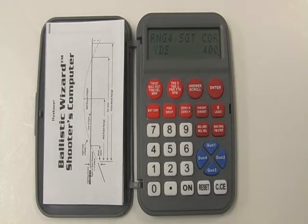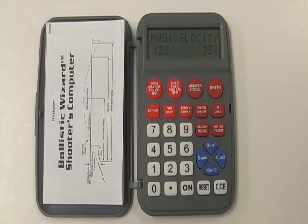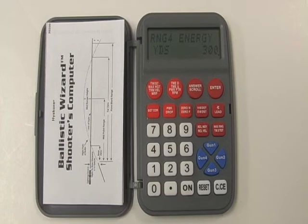Next, we have range for sight correction. This is the distance that the wizard will use to calculate the number of quarter-minute clicks necessary to adjust elevation when shooting at a distance other than the zeroed distance. Next, we have range for velocity — the input necessary for calculating velocity at a given distance. Next, we have range for energy — the distance that needs to be input for calculating energy at a given distance. Next, we have range for lead — the distance that must be input for calculating the number of feet to lead a moving target.